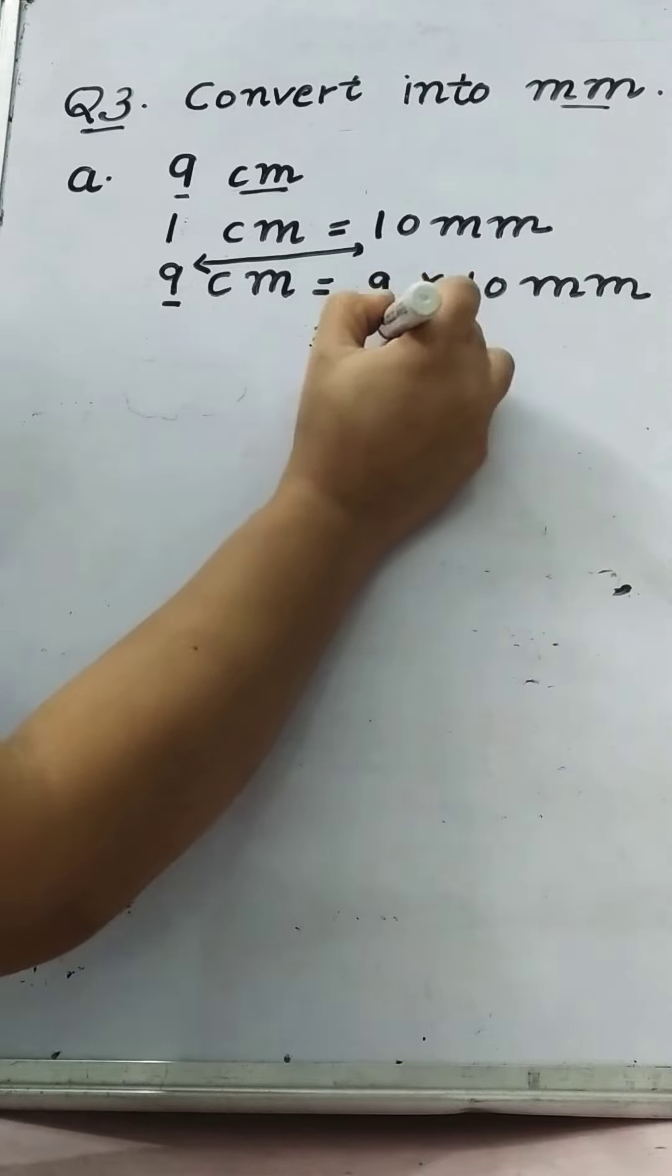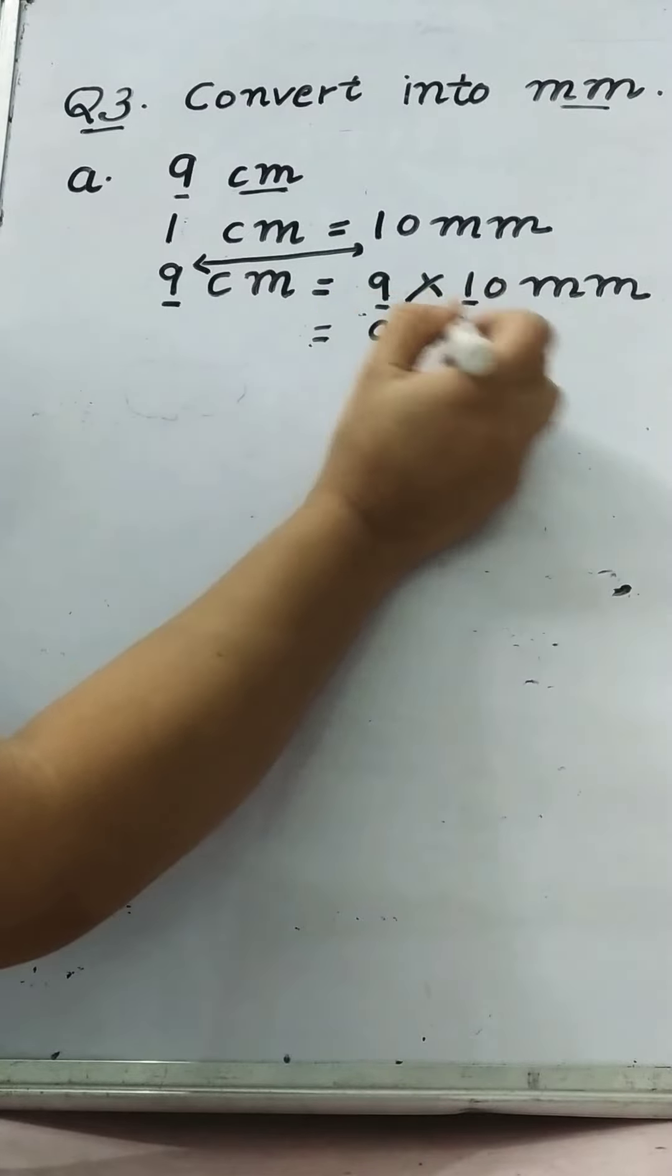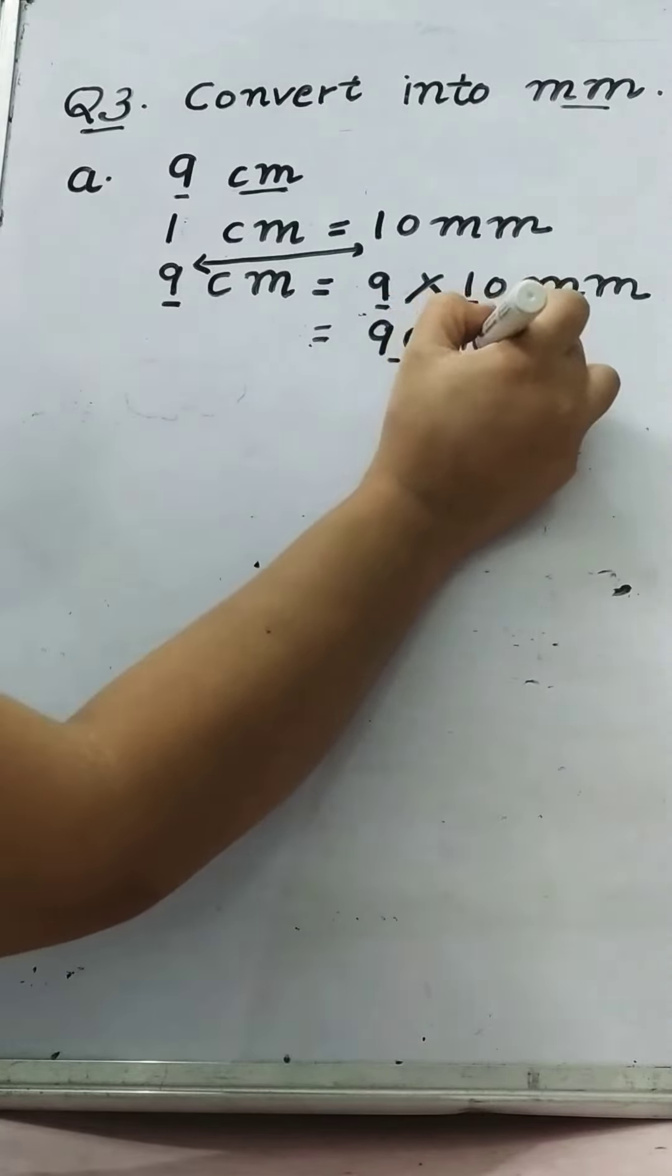9, 1 side 9, this 0 will put here so the answer will be 90 millimeter.